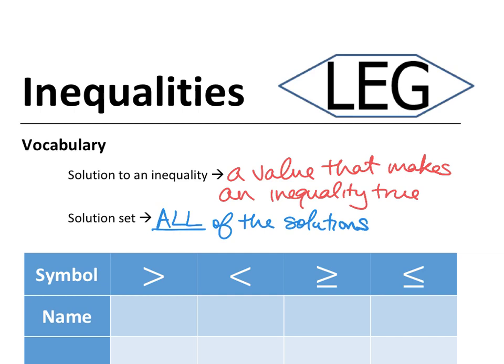We do need to review the names of the four inequality signs we're going to use. Who remembers what the inequality symbols are called? There's greater than, there's less than, and there's greater than or equal to, or less than or equal to. It's hard to remember which one's which sometimes.